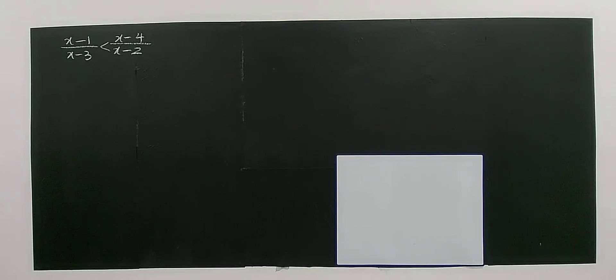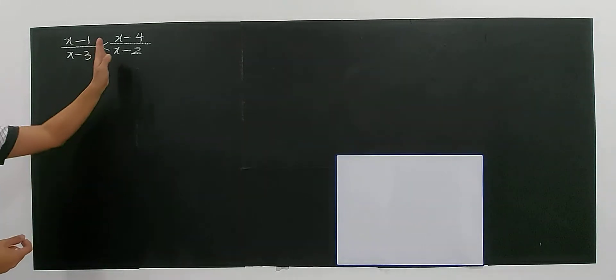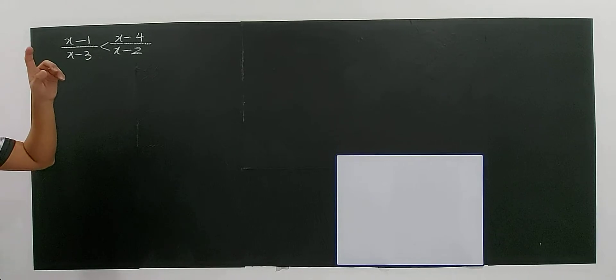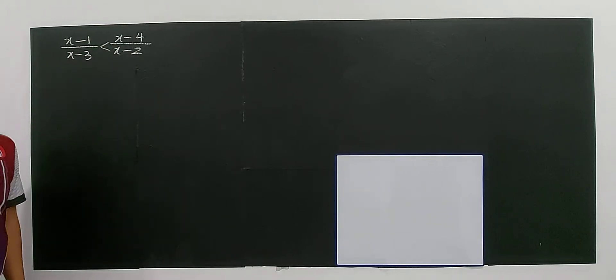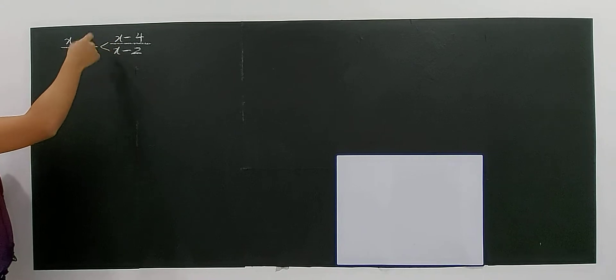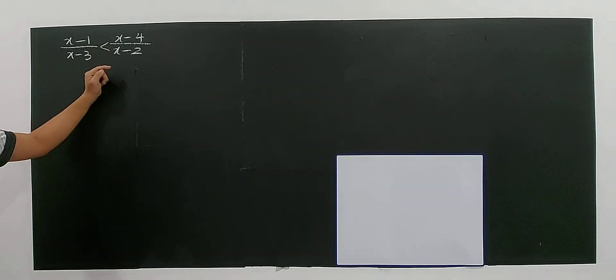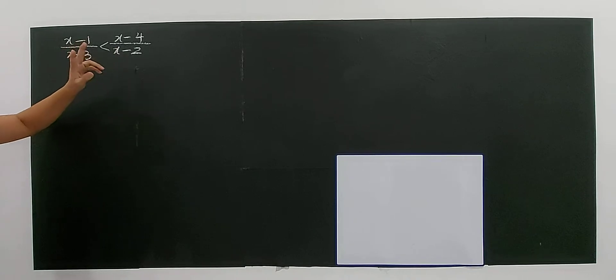Let's look at rational inequalities. There are rational functions on both the left-hand side and the right-hand side. To solve a rational inequality, you must make sure one side is zero — usually the right-hand side. You cannot cross multiply because you don't know the sign of the variable. For example, x minus 3 could be negative. So: first, make sure one side is zero, and second, don't do cross multiplication.